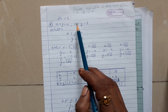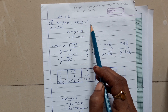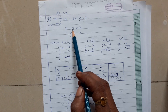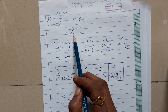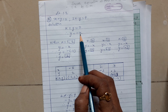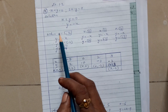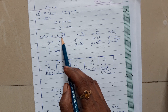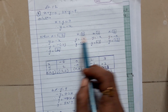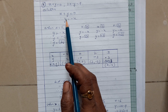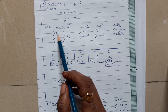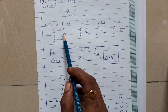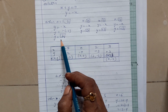The equations are: x + y = 0 and 2x - y = 9. For the first equation, x + y = 0, we get y = -x by taking x to the right side. Now, for x = -2, y = -(-2) = 2.